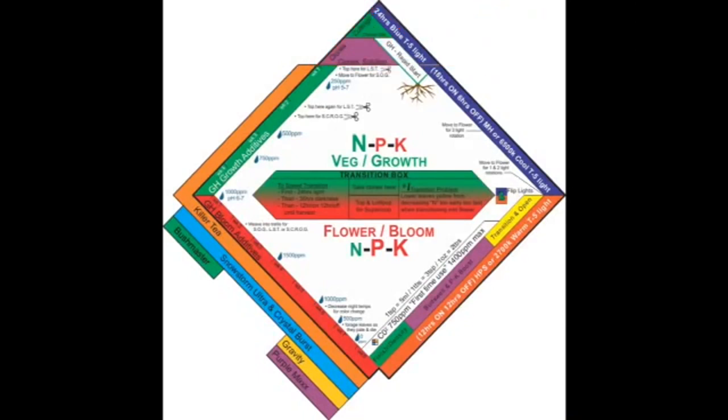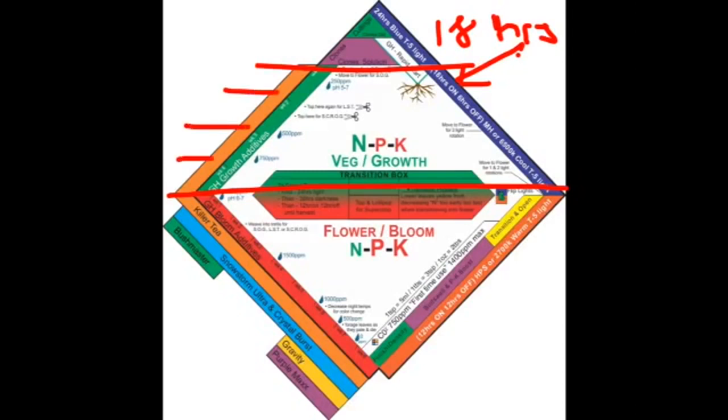Alright, if we continue on, the next section from here to here is going to get 18 hours of light. And you can see, it's divided into weeks 1, 2, 3, 4. Because this section here for the cuttings does not count as veg weeks. That's rooting weeks.